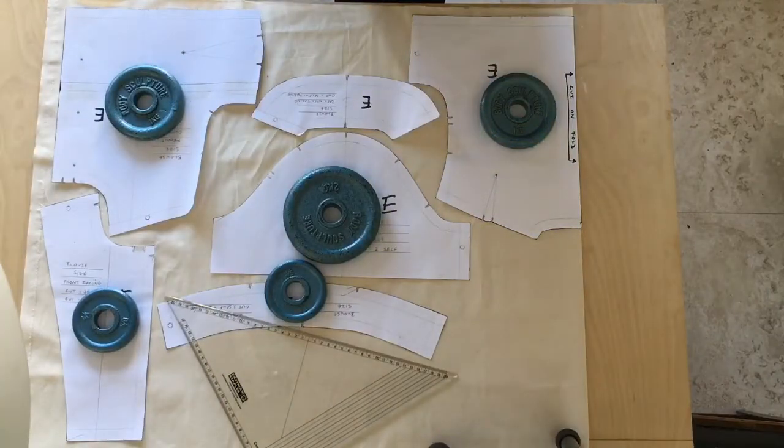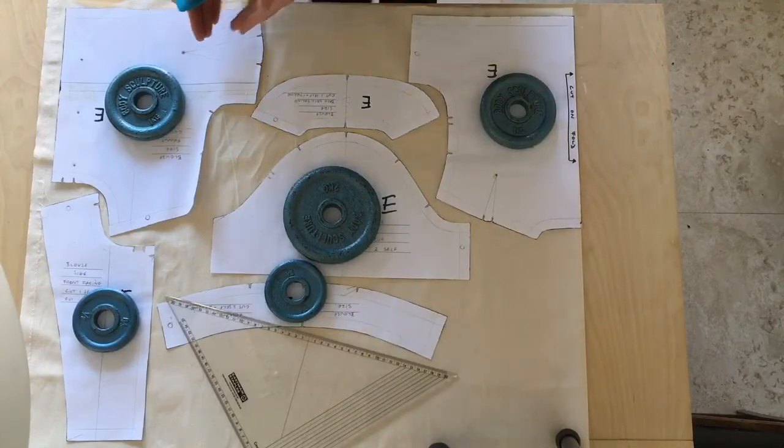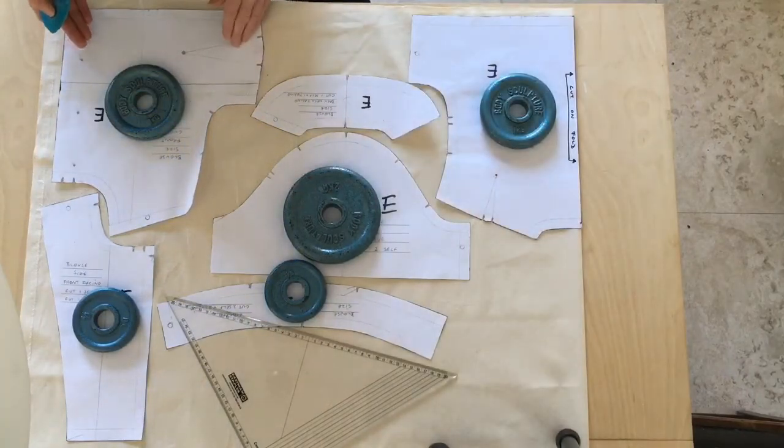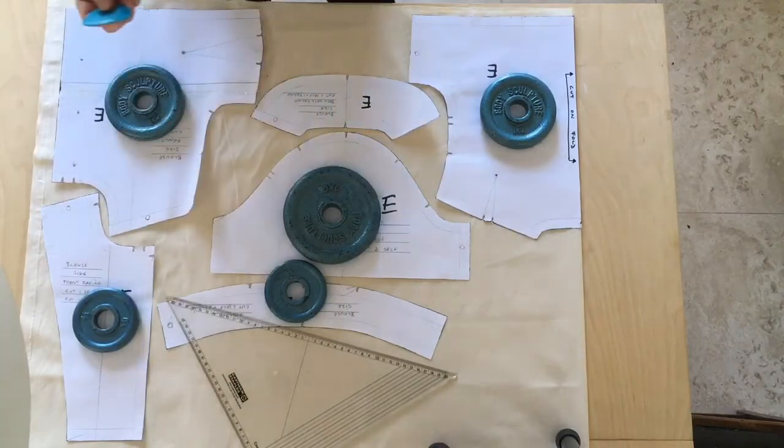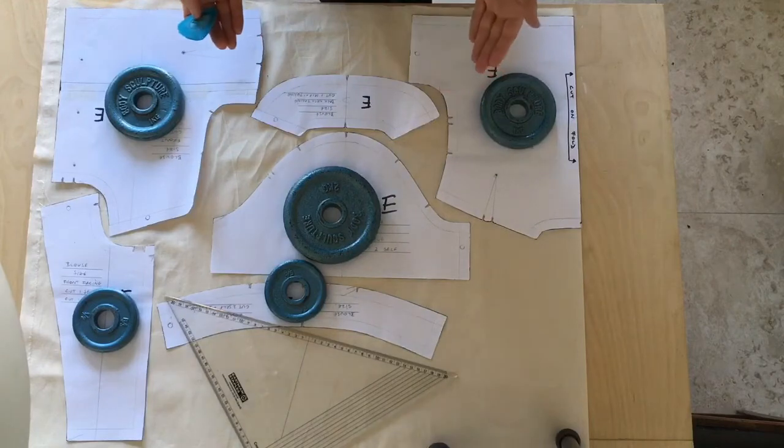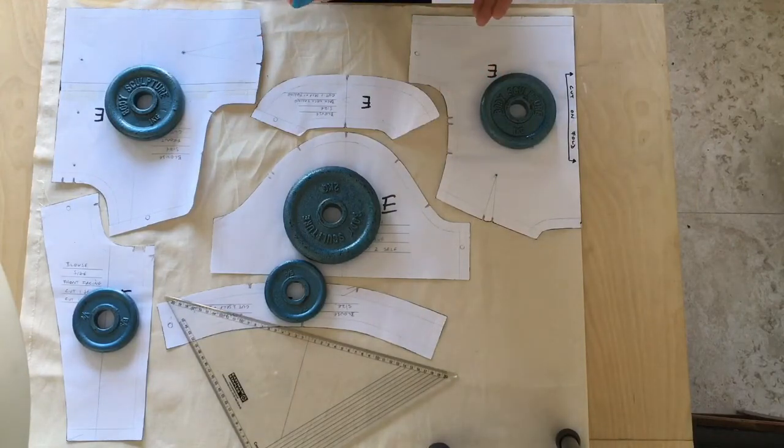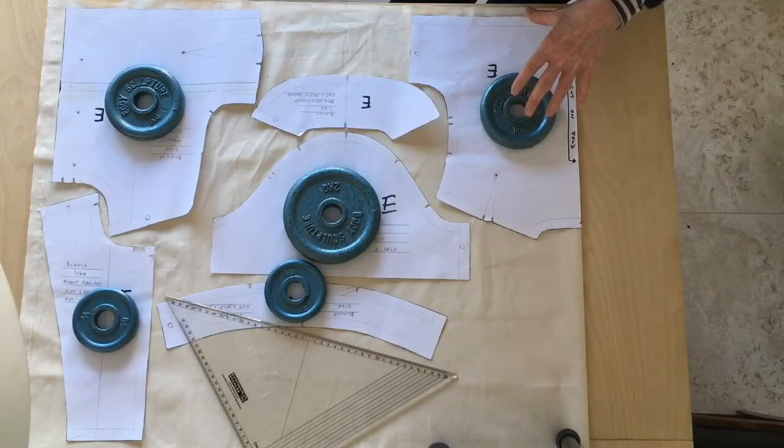To cut out the pieces that I have, I have two choices. I can either pin the pattern pieces down onto the fabric using pins and then cut out afterwards. I do find it myself a little bit faster to work with chalk to trace out the pieces and then to cut out with scissors afterwards when I don't have the pattern pieces pinned on.